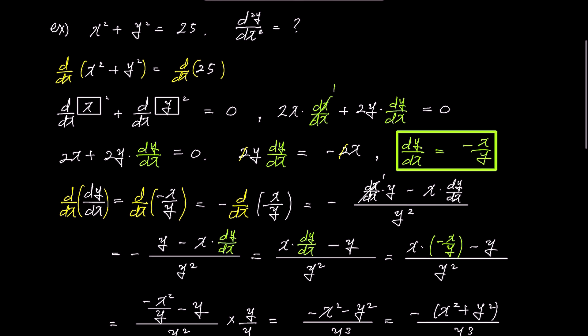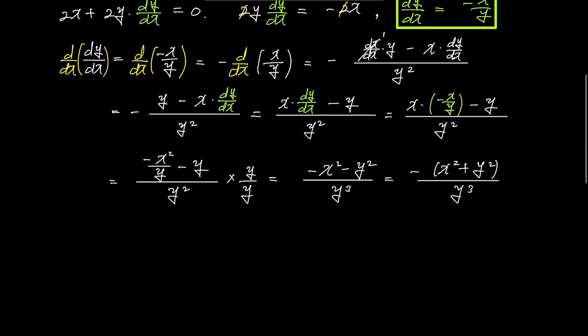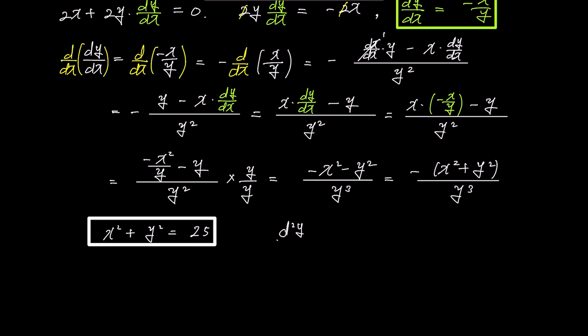To simplify further, we multiply both numerator and denominator by y. The numerator becomes negative x squared minus y squared, and the denominator becomes y to the power of 3. This simplifies to minus x squared plus y squared over y cubed. Recalling that x squared plus y squared equals 25 from our original problem, we substitute this, and the second derivative becomes negative 25 over y to the power of 3. We've simplified the second derivative to a very straightforward expression!